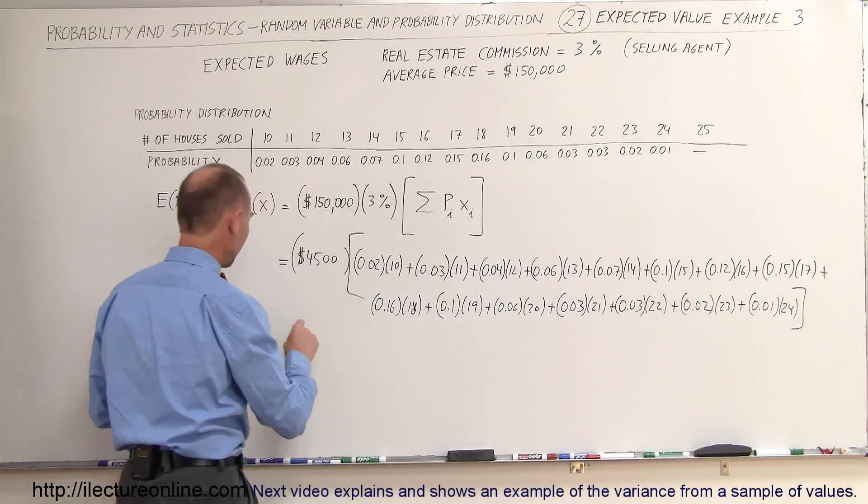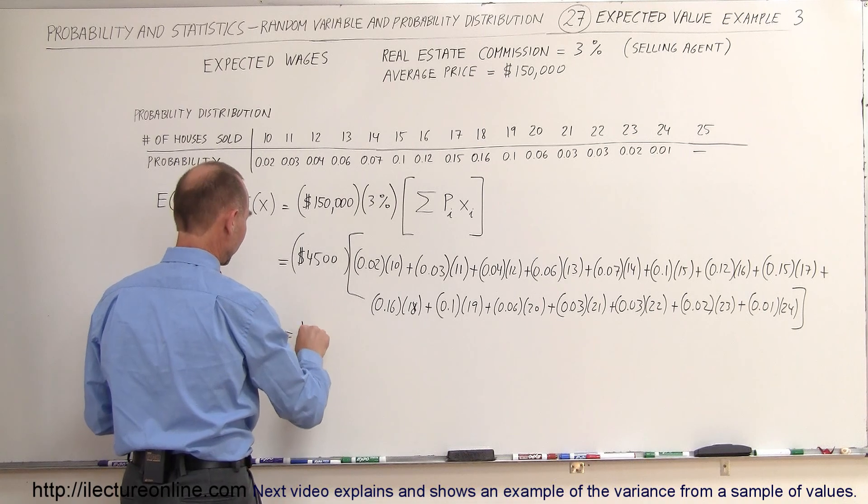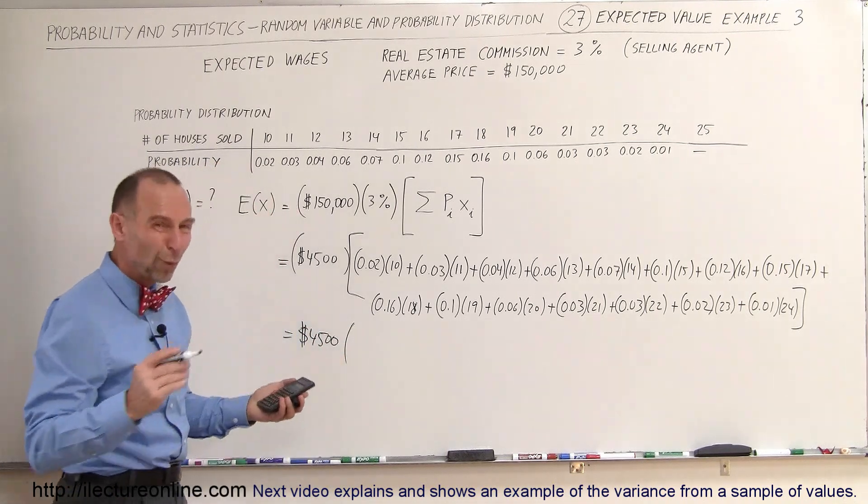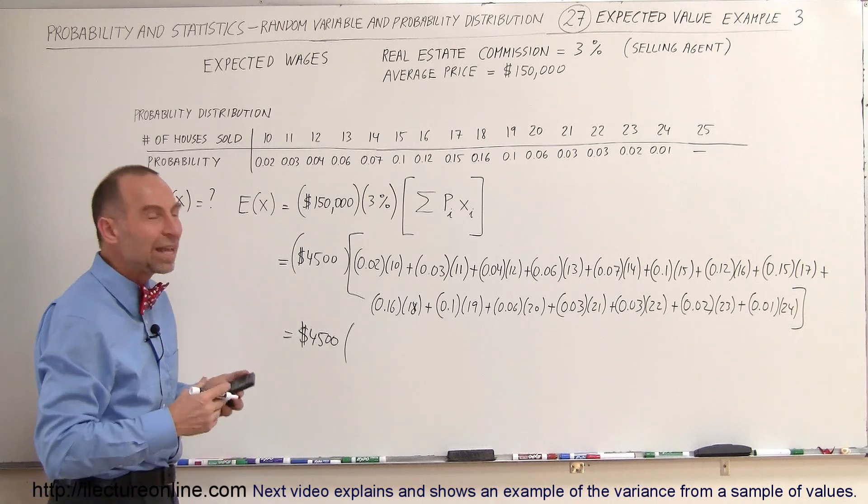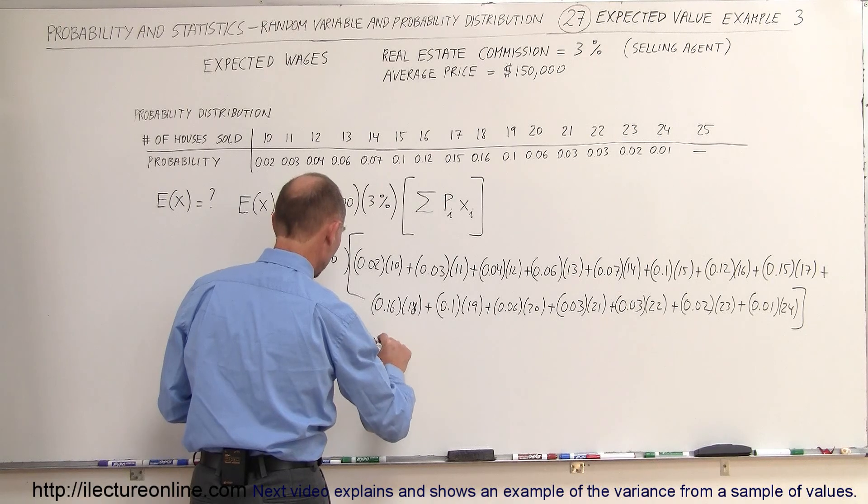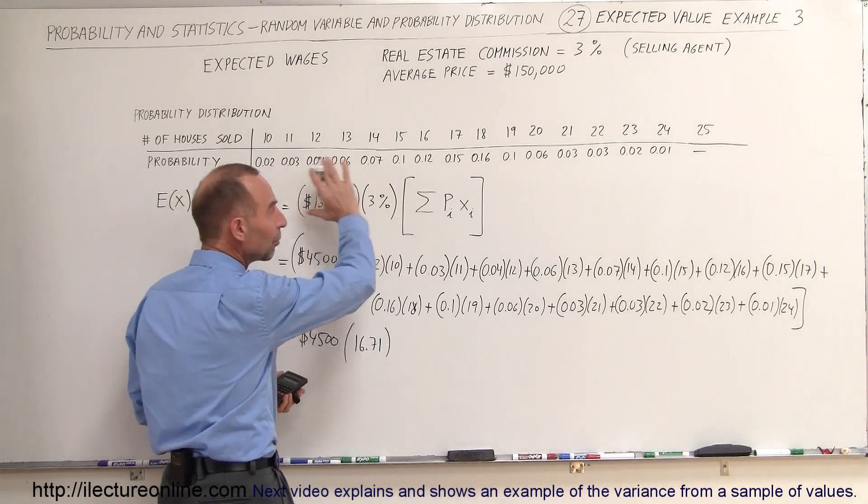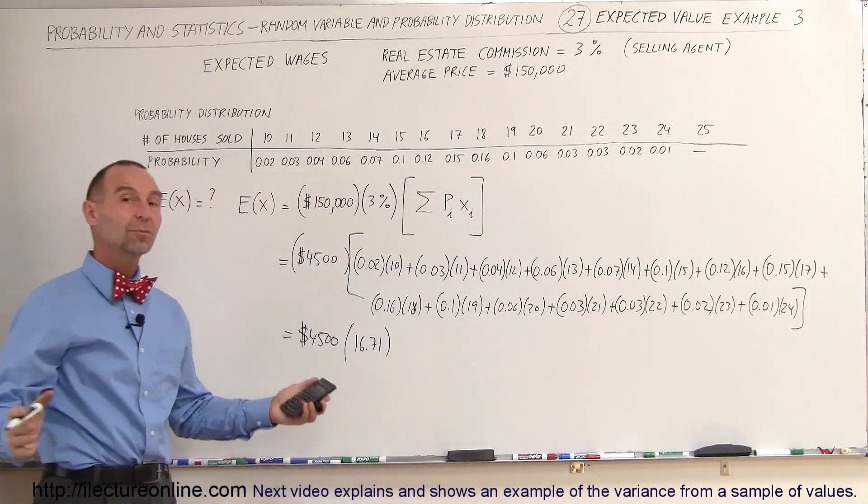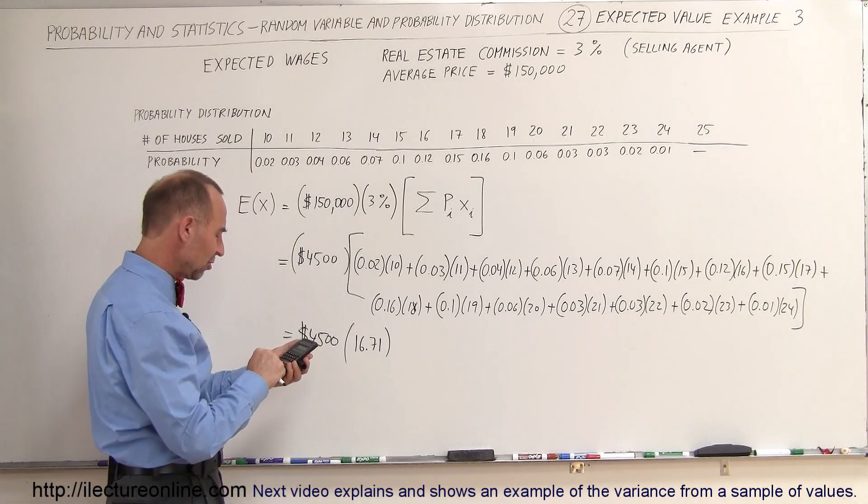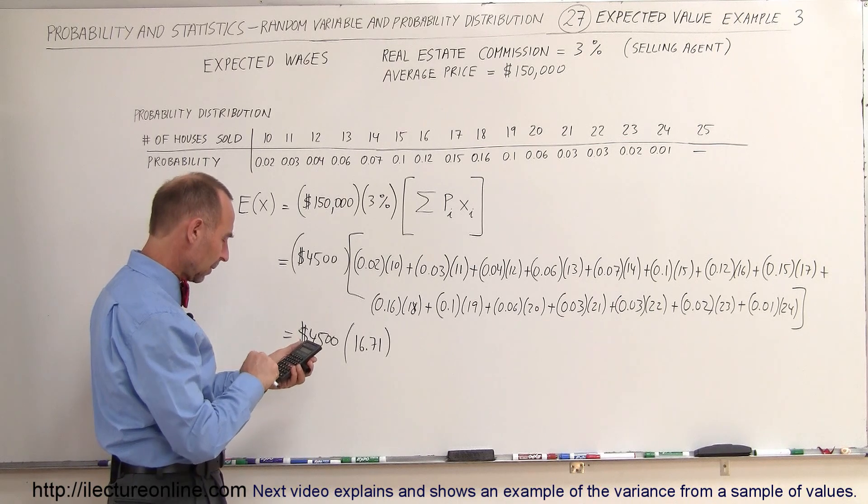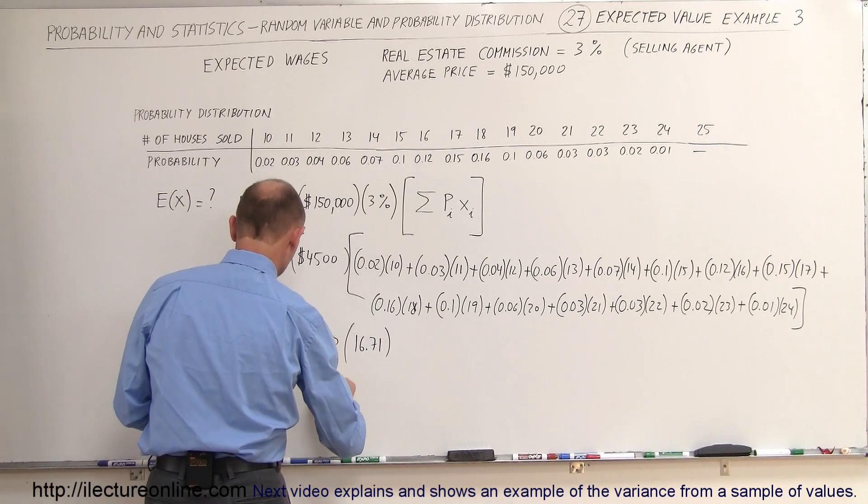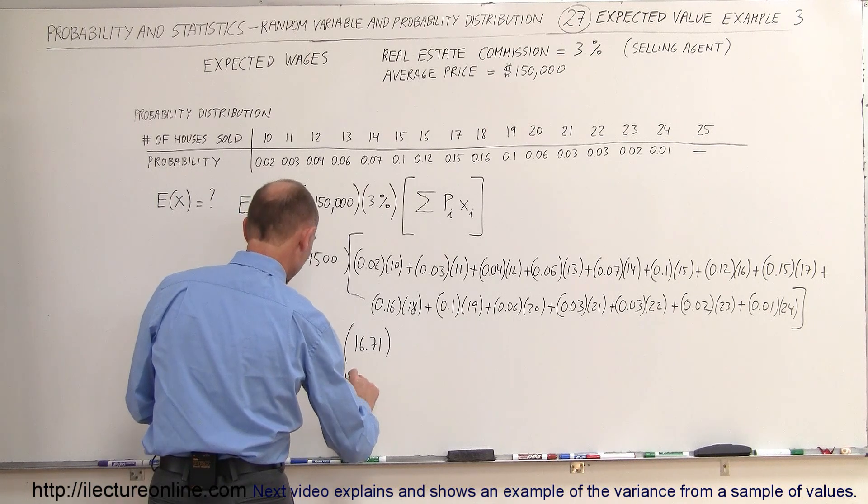And so what we have now is we have the number $4,500 per house times the weighted average probability or weighted average houses sold would be 16.71. So with this kind of probability distribution, you can expect that you would sell 16.71 homes. And so the real estate agent can then expect to make $75,195.